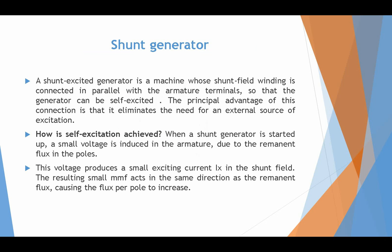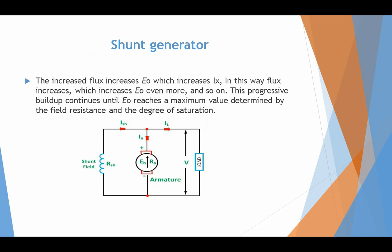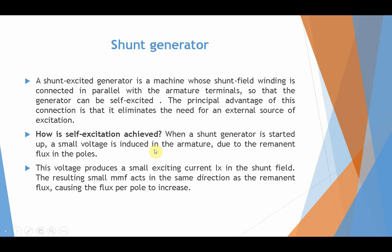Another type is the shunt generator. In a shunt excited generator, the shunt field winding is connected in parallel with the armature winding, so that the generator can be self-excited. The principal advantage of this connection is that it eliminates the need for an external source of excitation. In the separately excited case, we needed a separate source; here we do not.